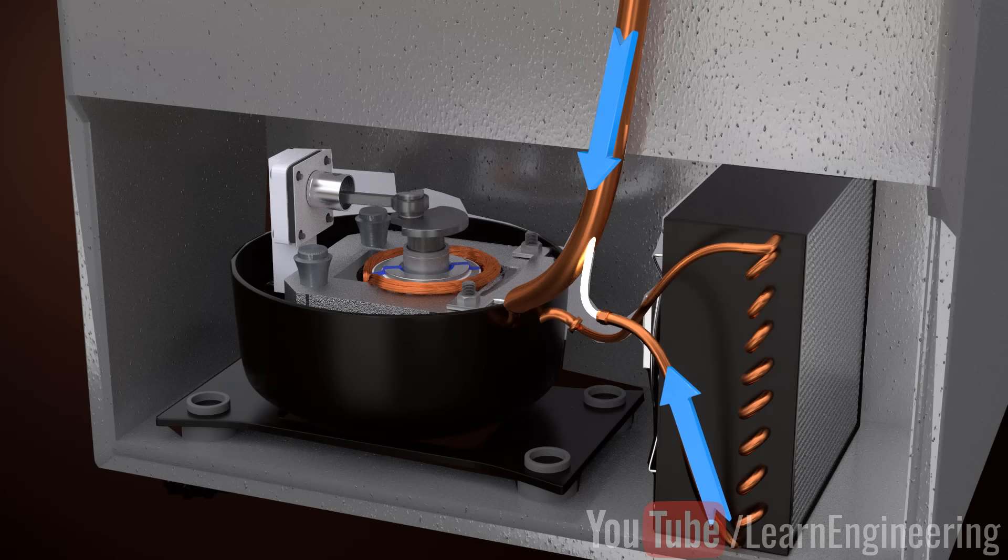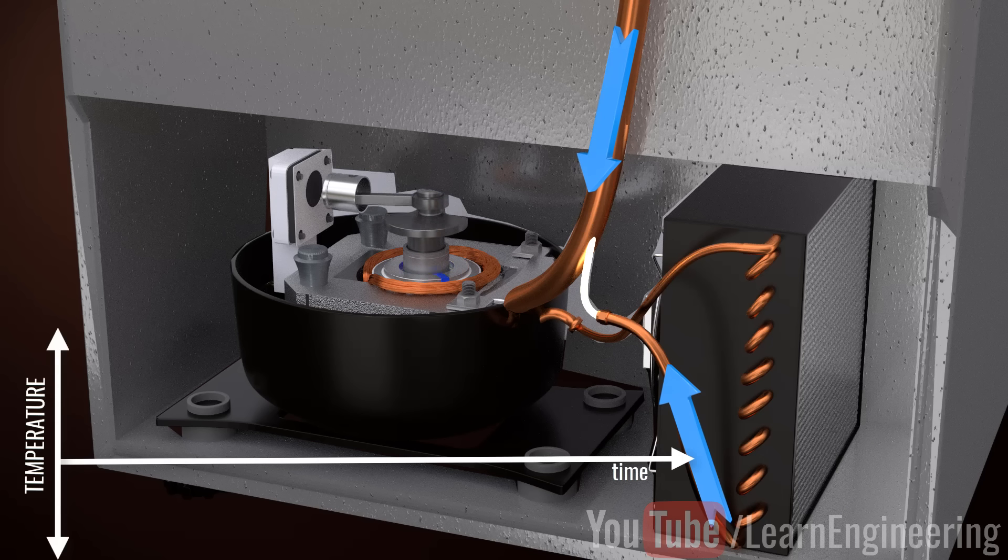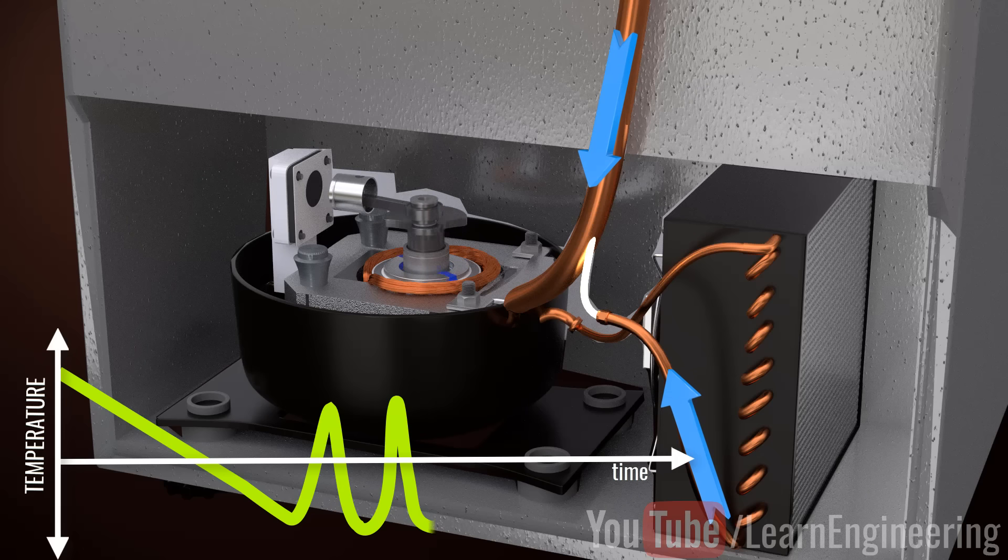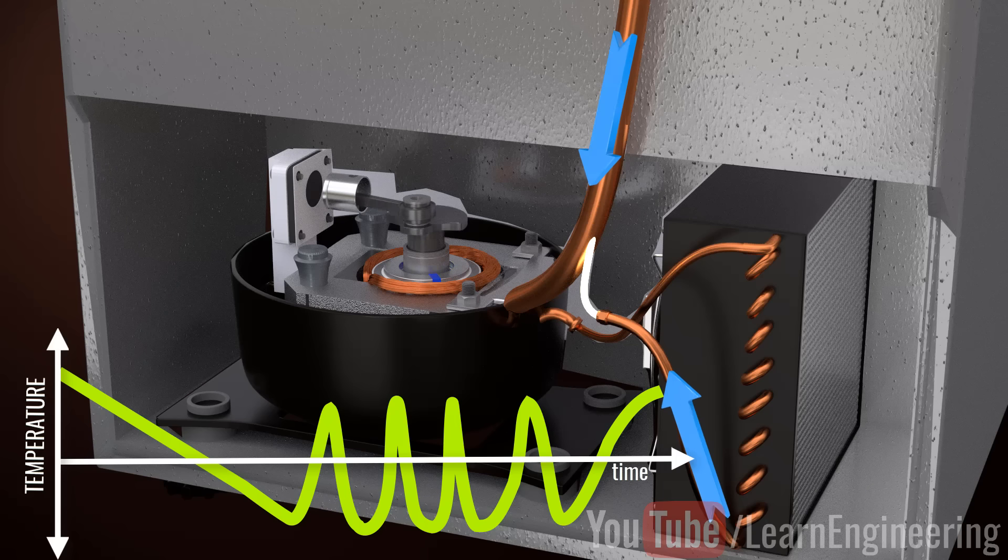You might have noticed that the compressors in old refrigerators will either be on or off. This is a single-speed technology. When the inside temperature of the refrigerator reaches an optimum level, the compressor will be turned off. When the temperature goes above a certain limit, the compressors will be turned on.